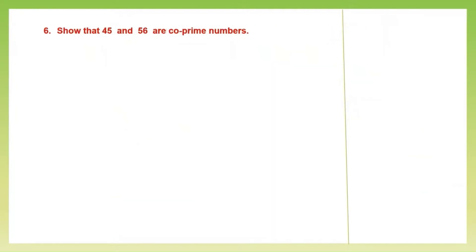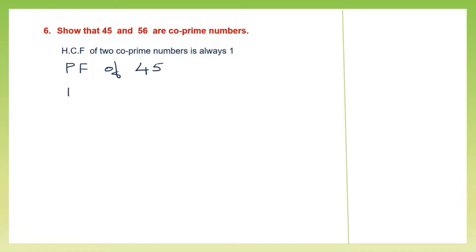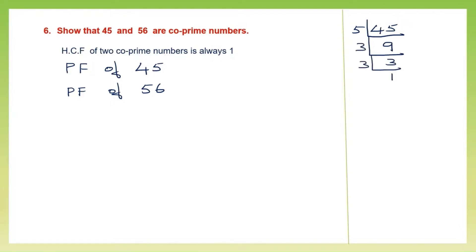Next question: we need to show that 45 and 56 are co-prime numbers. Co-prime numbers are two numbers that don't have a common prime factor, and the HCF of two co-prime numbers is always 1. So we have to find the prime factors of 45 and 56 and prove that they don't have any common prime factor. For 45: 5 nines are 45, then 3 threes are 9, then 3 ones are 3. So the prime factors of 45 are 3 × 3 × 5.